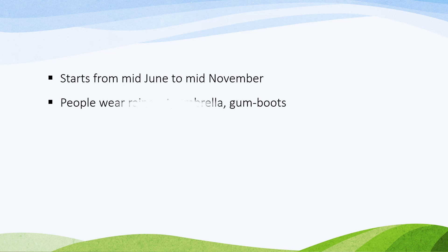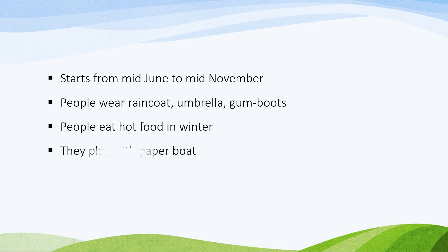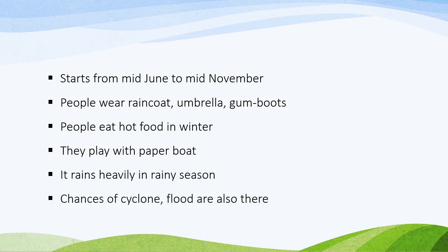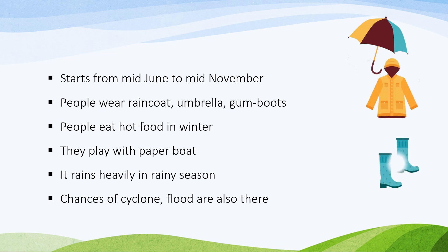The rainy or monsoon season starts from mid-June to mid-November. People wear raincoats, carry umbrellas, and wear gumboots. People eat hot food. They play with paper boats. It rains heavily in the rainy season. Chances of cyclones and floods are also there.